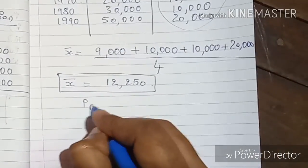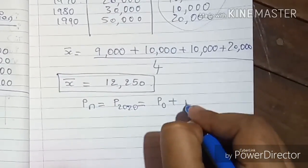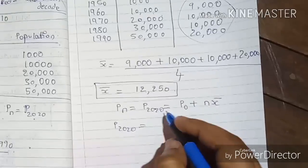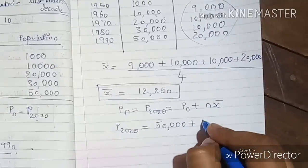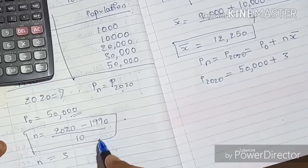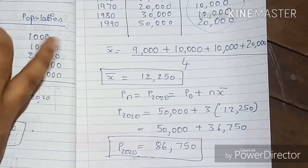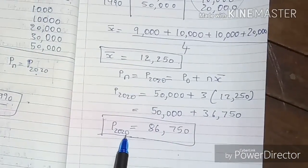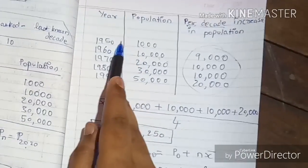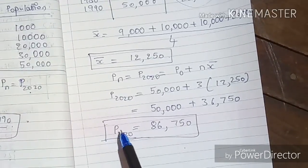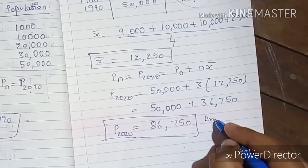Now applying the formula: P(2020) = P0 + n·X̄ = 50,000 + 3 × 12,250 = 86,750. So the predicted population for 2020 is 86,750. This method is called the arithmetic increase method, and that is how we find the population for a particular city using it.